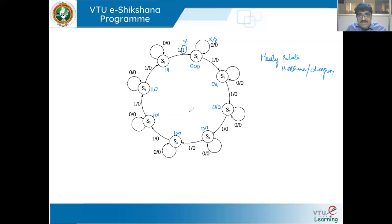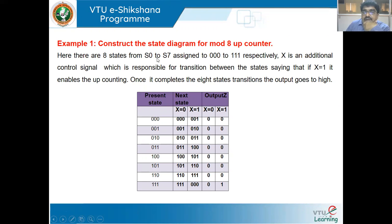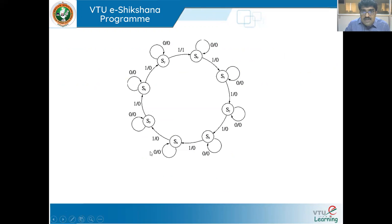This is an example of a Mealy state machine for the mod-8 synchronous up counter. To summarize: eight states S0 to S7 assigned to 000 through 111; X is an additional control signal that enables up counting when X equals one; output Z goes high only after all eight state transitions complete. Since output depends on both present state and present input X, it is a Mealy sequential machine.